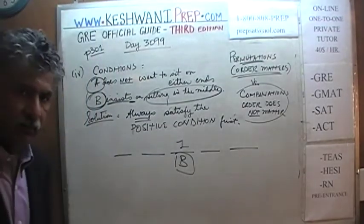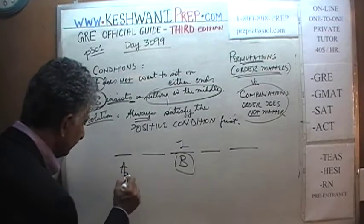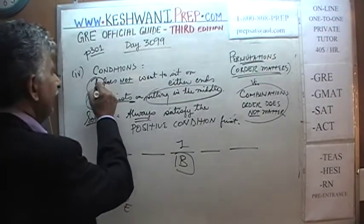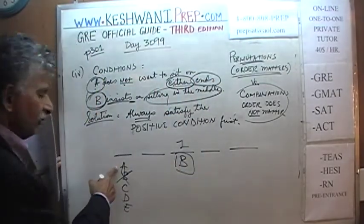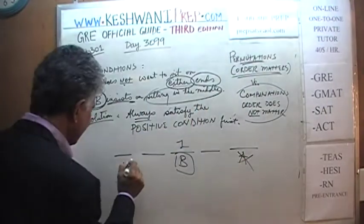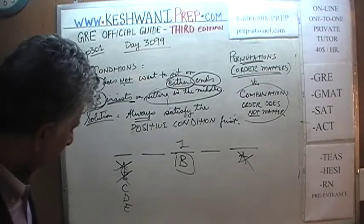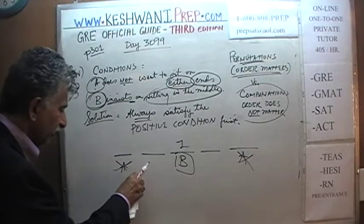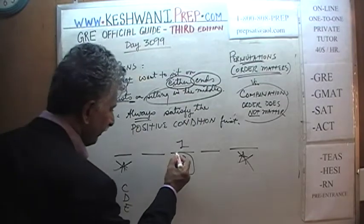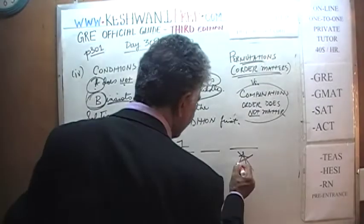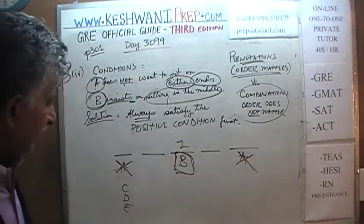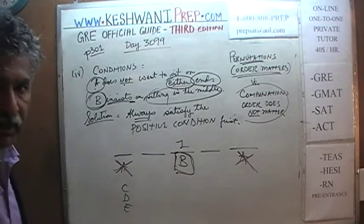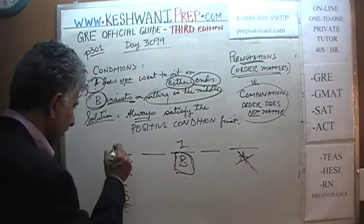Then we have four people left: A, C, D, and E. We are also told that A does not want to sit on either end — A cannot go in position one or position five. And since B is already seated in the middle, only C, D, or E can go in the first chair. There are three possibilities for the first position.